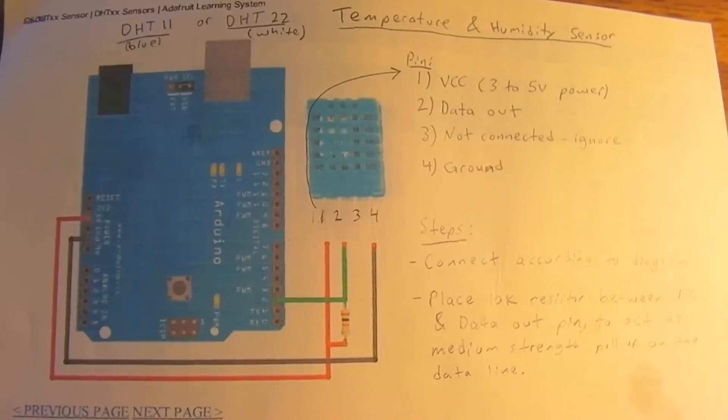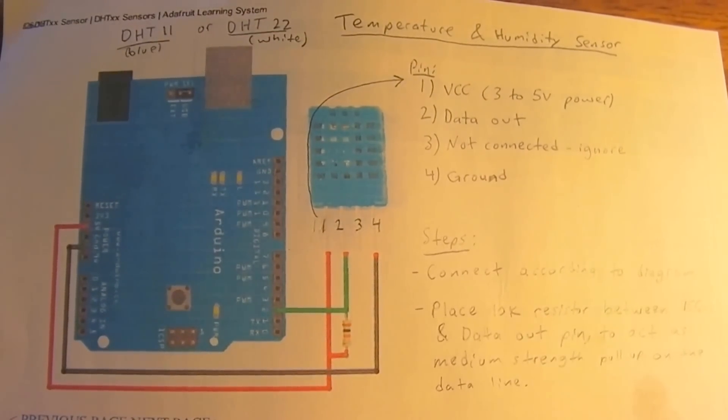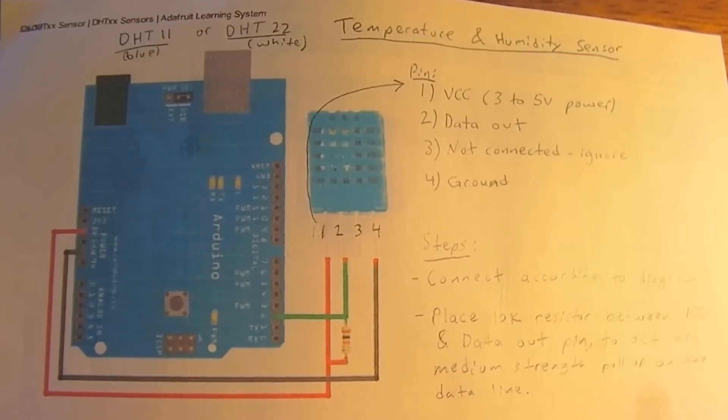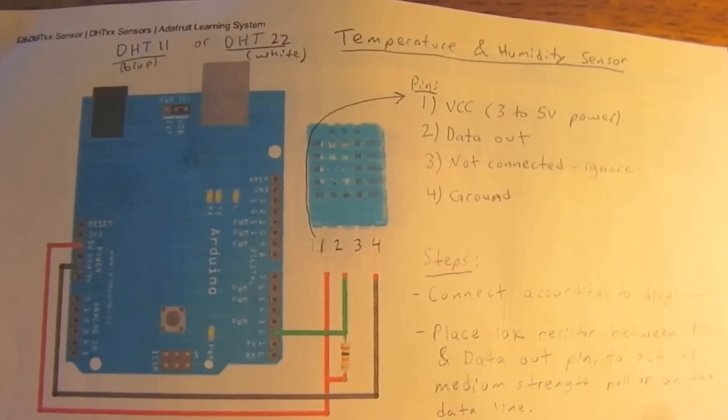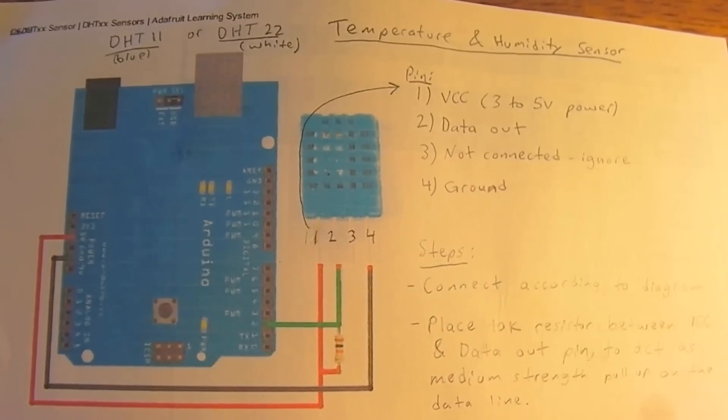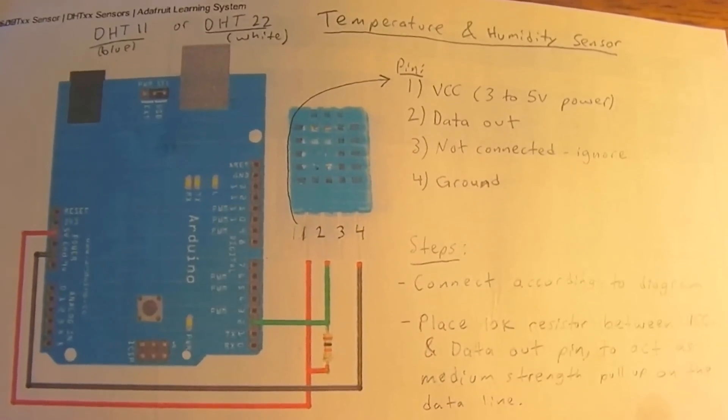You've got pin 1 going to 5V. Pin 2 out of the sensor going to pin 2 on the Arduino. Pin 3 you just ignore. And pin 4 connects to ground on the Arduino. Your first pin is your voltage carrying current, 3 to 5V power. Your second pin is your data out. And your fourth pin is ground.